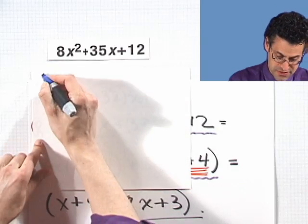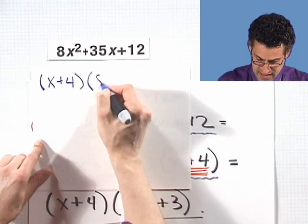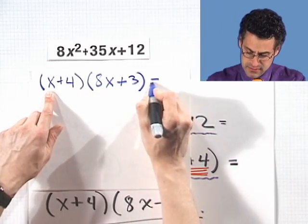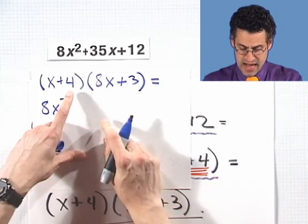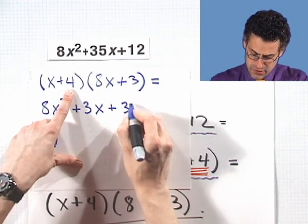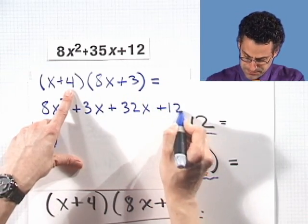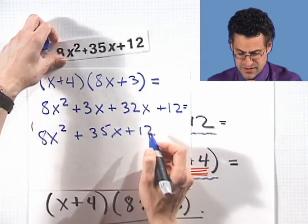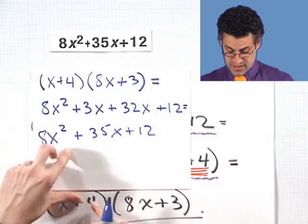Maybe you don't believe me — there's an easy way to check. All we have to do is verify by FOILing out. Let's quickly FOIL x plus 4 times 8x plus 3. I have x times 8x, that equals 8x squared. The outside terms produce plus 3x. The inside terms produce 32x. And the last times last is plus 12. When I combine the like terms in the middle, I see 8x squared plus 35x plus 12, which perfectly corresponds to the original. This is the correct factorization.